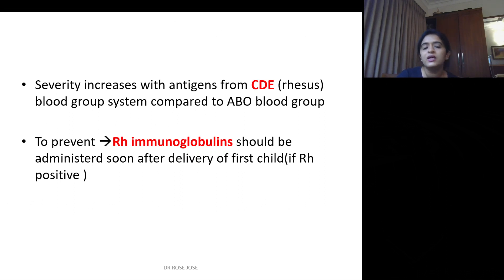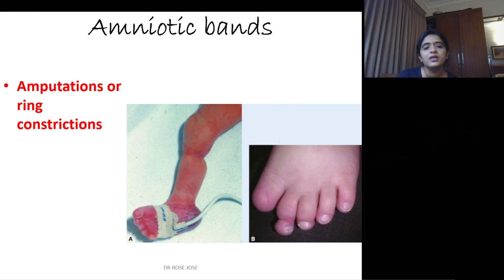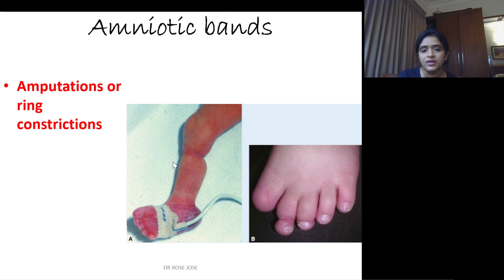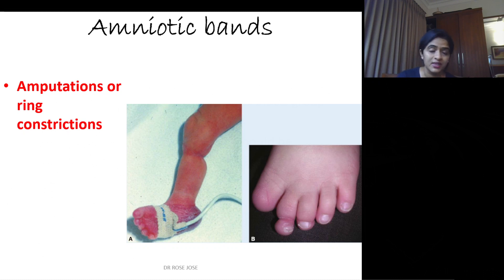Amniotic bands: sometimes a part of the amnion will be torn and it will encircle the digits and limbs, resulting in amputations or ring constrictions. You can see ring constrictions and a part of the big toe already amputated by the amniotic bands, as well as ring constrictions in the limb. This is roughly the placenta and umbilical cord in a nutshell. For detailed versions, please do watch my channel. Thank you.